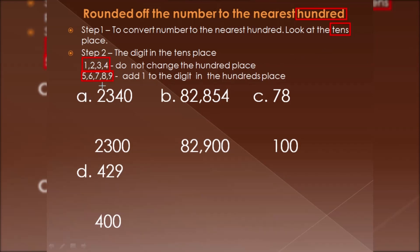Let's take an example: 2340. The hundreds place is 3 and the tens place is 4. Since 4 is less than 5, we do not change the hundreds place — it remains as it is. All digits after the hundreds place become zero, and the thousands place stays as it is. So the rounded number is 2300.